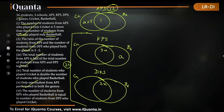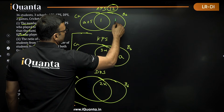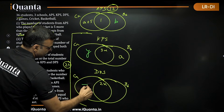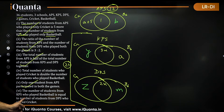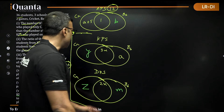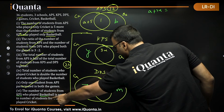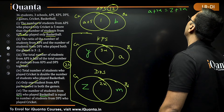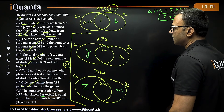Now I will assign variables for the unknowns. Let KPS only cricket be Y, KPS basketball be A plus 3x, DPS only basketball be M, and DPS only cricket be Z plus 2x. From the condition KPS basketball equals DPS cricket, we get A plus 3x equals Z plus 2x, which gives us Z equals A plus x. Let this be equation B.